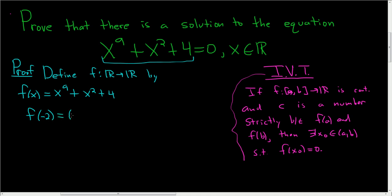So if you plug in negative 2, you get negative 2 to the 9th, and then negative 2 squared, and then 4. So this ends up being negative 504, which is less than 0.